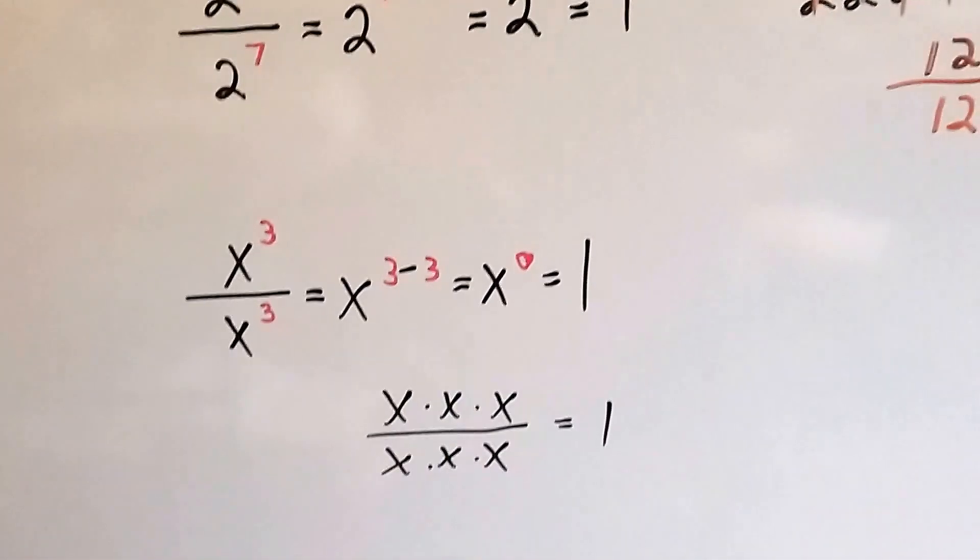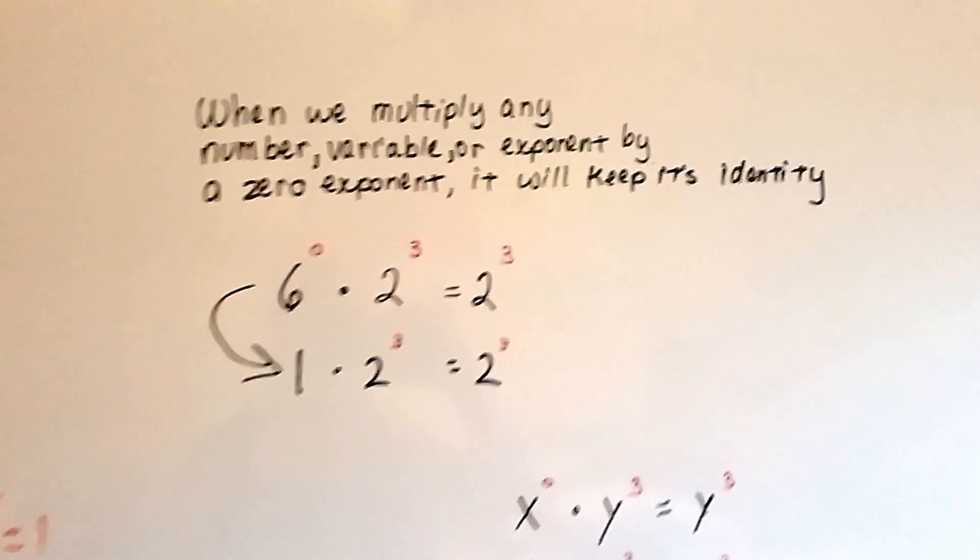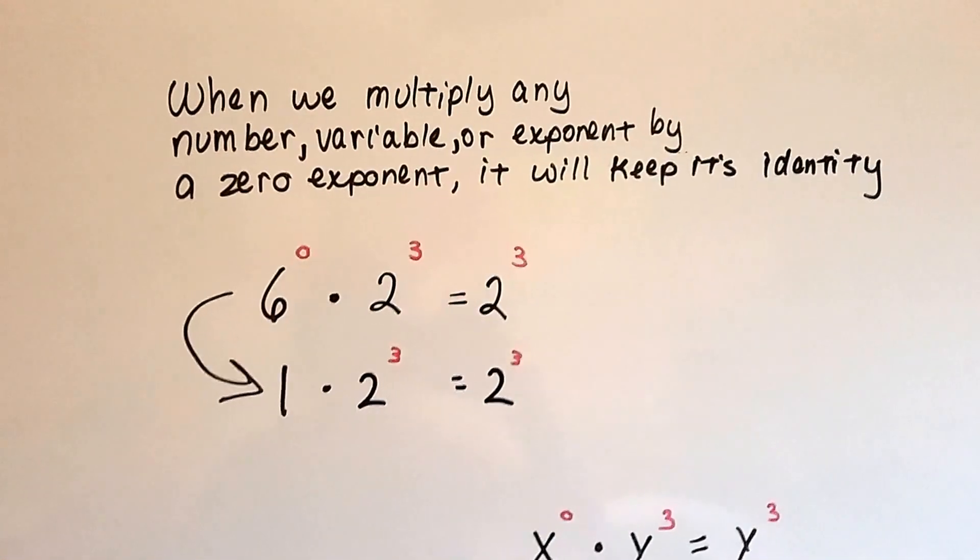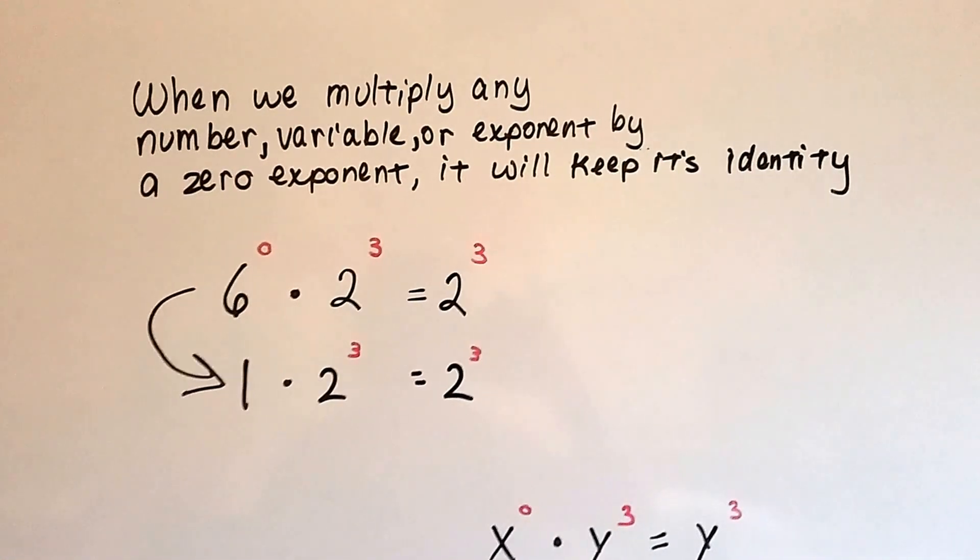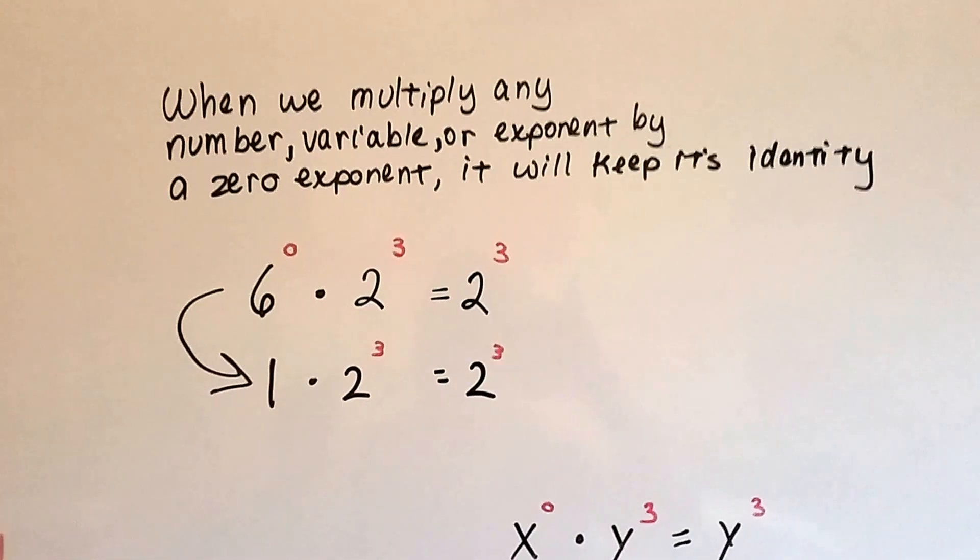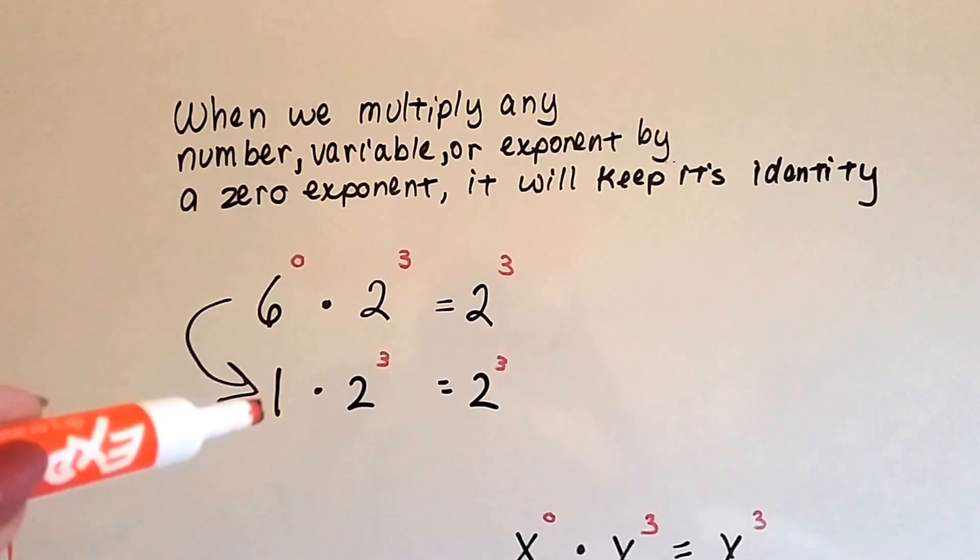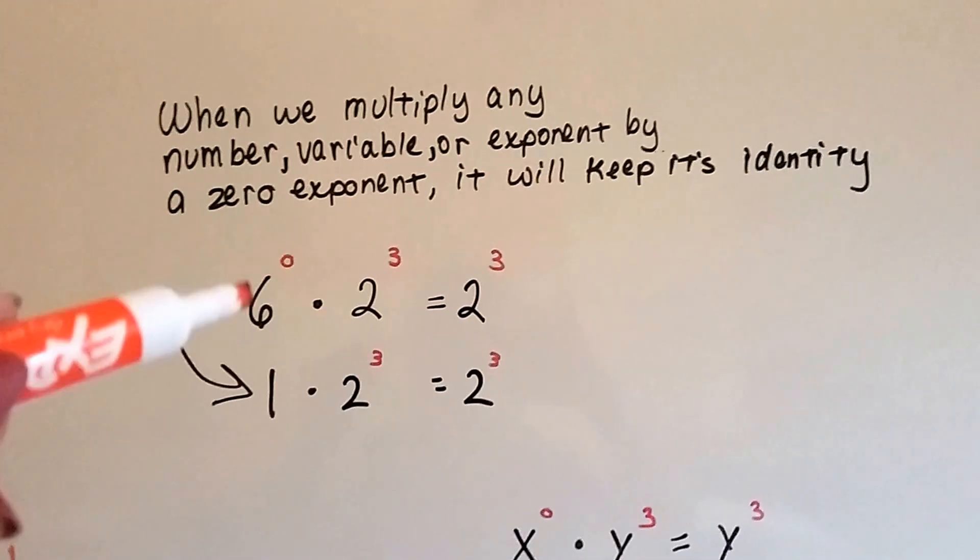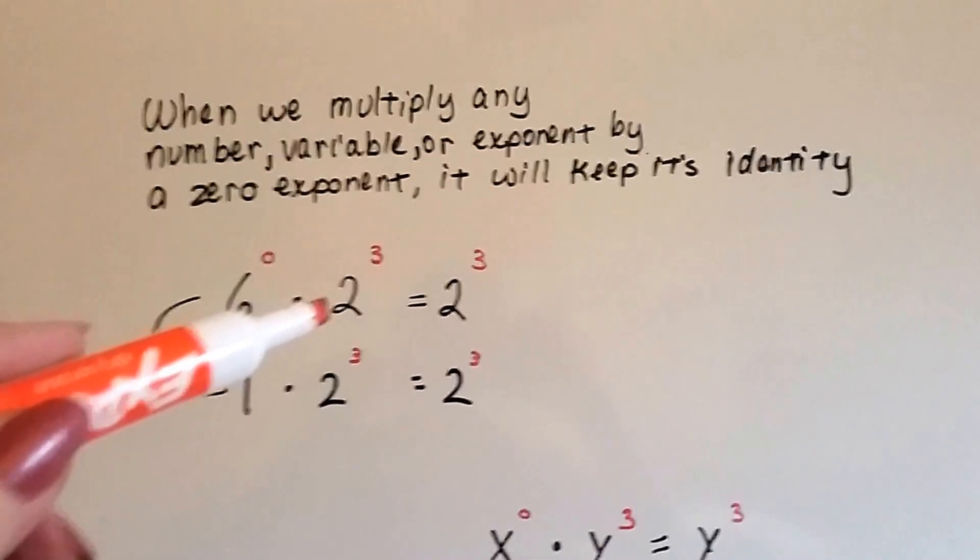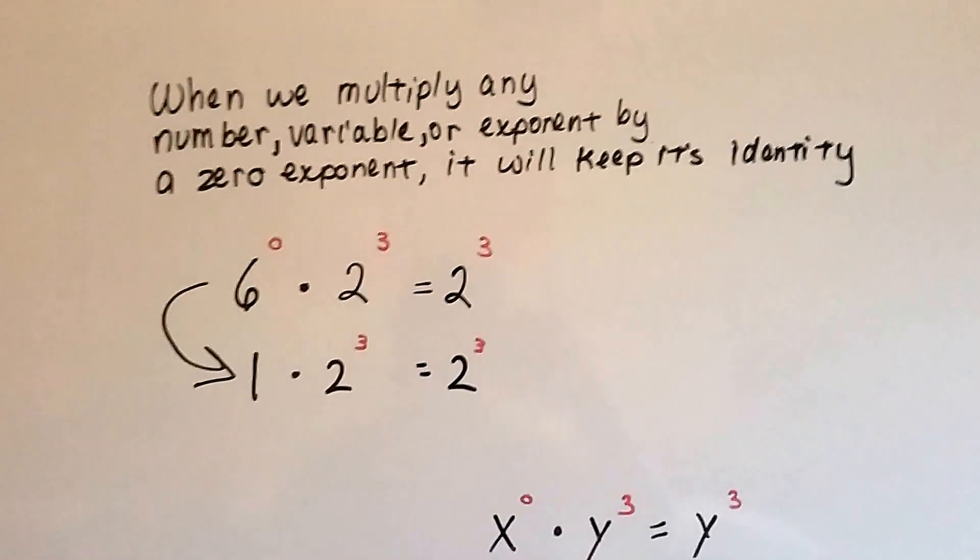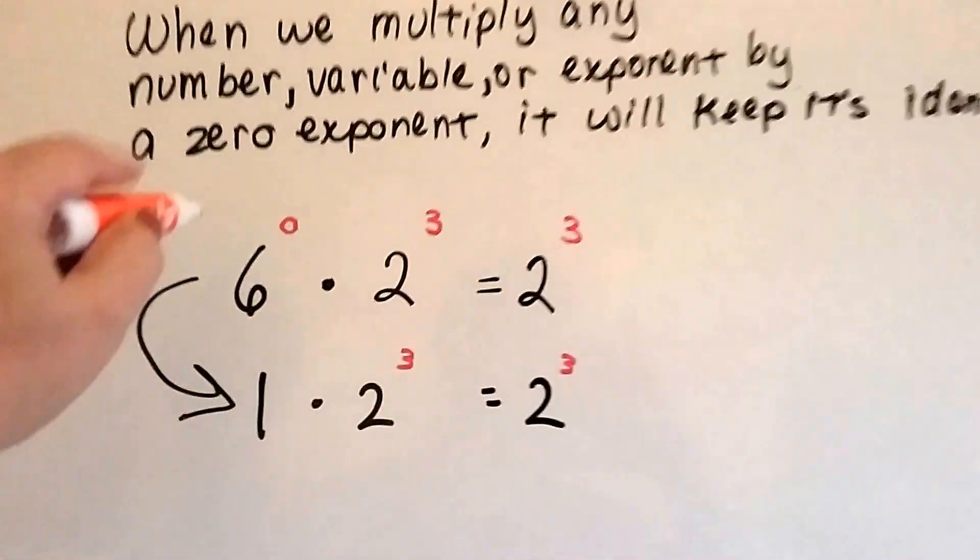It's the same numerator and denominator. So when we multiply any number, variable, or exponent by a 0 exponent, it's going to keep its identity like the identity property. Because 6 to the 0 power is 1. So if we did 6 to the 0 power times 2 to the 3rd power, it's going to stay 2 to the 3rd power, because this guy is a 1.